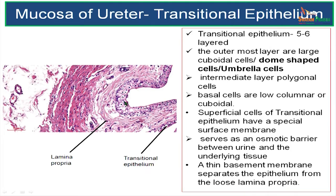They are cuboidal cells. Cells of the intermediate layer are polygonal, and cells of the basal layer are low columnar or cuboidal. There are 5 to 6 layers in an empty wall of the ureter. The outermost layer is dome-shaped cells or umbrella cells, the intermediate layer is polygonal cells, and basal cells are low columnar or cuboidal.